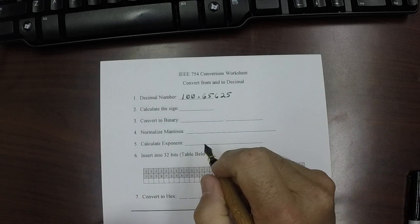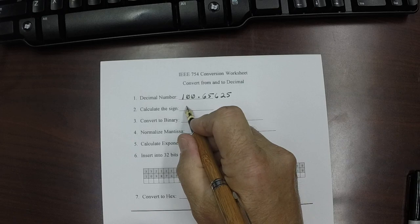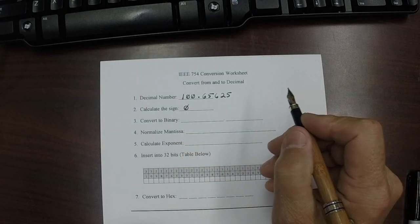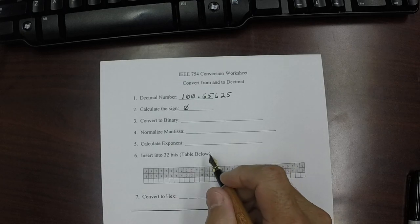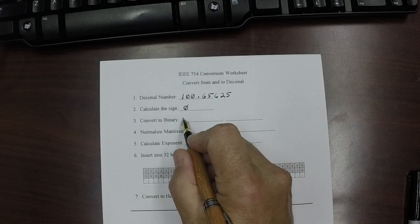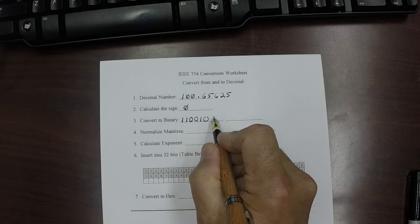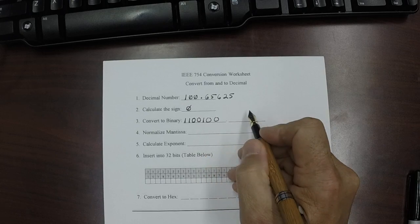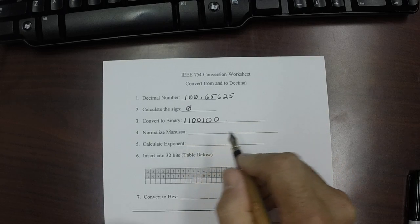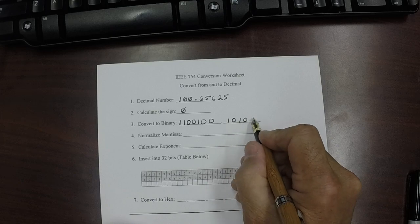So, this is the steps you go through. The very first thing you do is you calculate the sign. This is going to be a 0, and we're going to go ahead and we're going to convert it to binary. The binary for 100 is actually 1, 1, 0, 0, 1, 0, 0, 0, and 0.65625. The binary for that is actually 1, 0, 1, 0, 1.